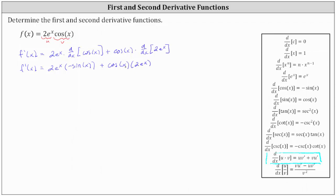Now let's go ahead and factor this. Notice how the greatest common factor between these two products is two e to the x. Let's write f prime of x as two e to the x times the quantity cosine x minus sine x. Notice how if we multiply, we do still have the same expression. So here is the first derivative.